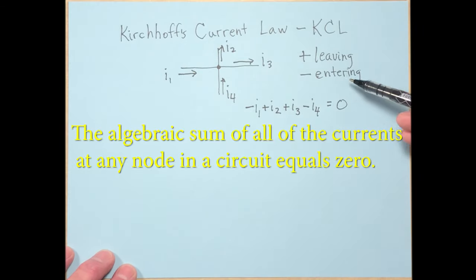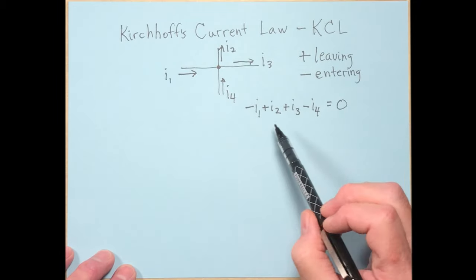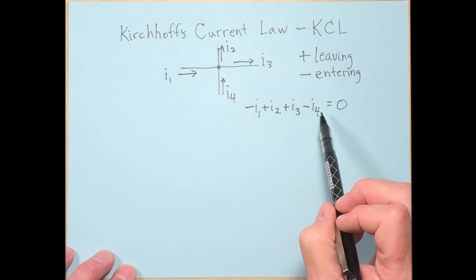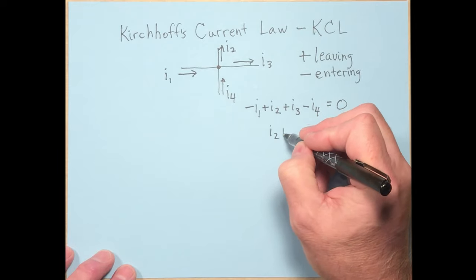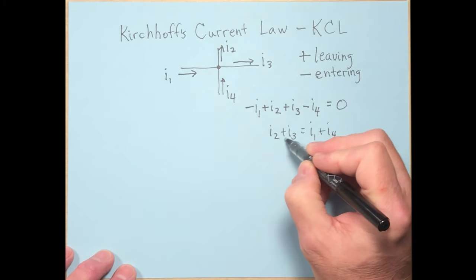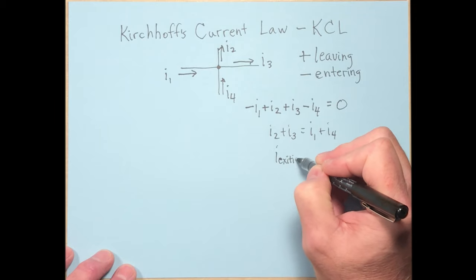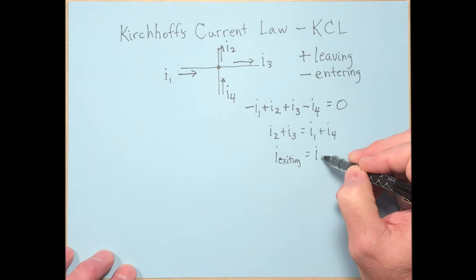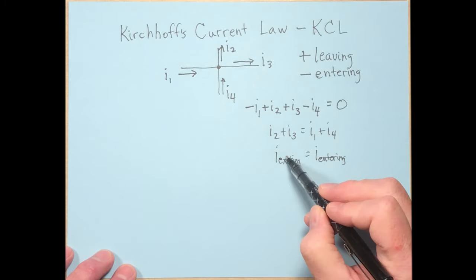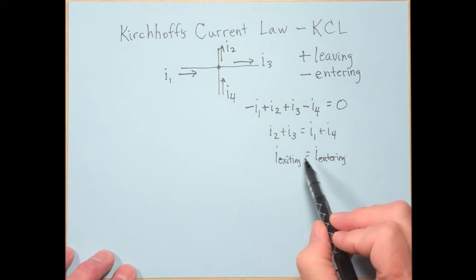That's a KCL equation. KCL says the algebraic sum of all currents at any node equals zero. This is really saying the currents coming in must equal the currents going out. Rearranging: I2 plus I3 equals I1 plus I4. So think of KCL simply as: the sum of the currents entering a node equals the sum of the currents exiting the node. What goes in must come out.